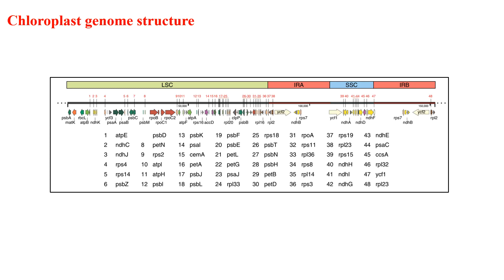Now we will see the chloroplast genome structure. Most chloroplast genomes of angiosperms exhibit a highly conserved organization with a typical quadripartite structure — four parts. This structure includes two copies of inverted repeats, shown in red, separated by a large single-copy region and a small single-copy region. The chloroplast genomes of angiosperms encode 110 to 130 genes, with a size ranging from 120 to 160 kilobases.